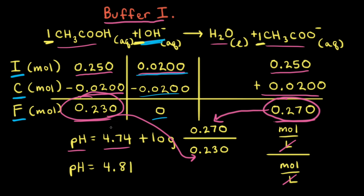So buffer 1 started at a pH of 4.74 and after the addition of the hydroxide anions the pH rose to 4.81. That's a relatively small change in pH, so buffer 1 did a pretty good job of resisting a large change in pH.